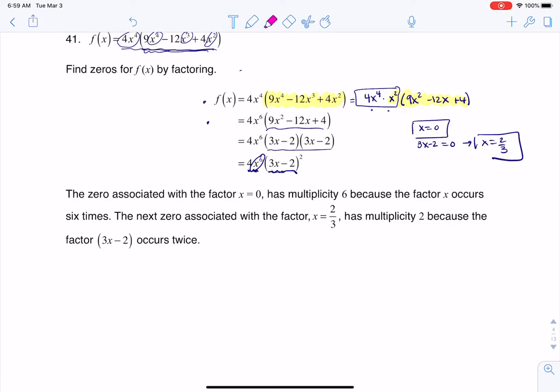But if we start to pick this apart, the zero associated with x equaling zero has a multiplicity of six because this exponent is six. And then the next zero I have, we said we had one at two thirds, and its multiplicity is two because the exponent on that was two. And that's how you figure out multiplicities.